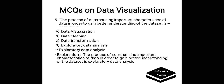The process of summarizing important characteristics of data in order to gain better understanding of the data set is — Options are: A. Data Visualization, B. Data Cleaning, C. Data Transformation, D. Exploratory Data Analysis. Correct answer is Exploratory Data Analysis. The process of summarizing important characteristics of data in order to gain better understanding of the data set is Exploratory Data Analysis.